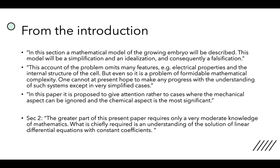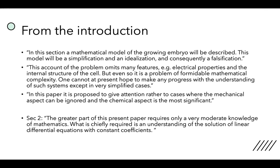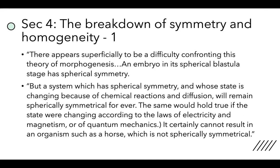In section four, Turing considers the idea of breakdown of symmetry and homogeneity. The homogeneous equilibrium is perturbed, and the perturbation does not bring the system back — that's the breakdown of homogeneity. The breakdown of symmetry is something we haven't explicitly discussed yet in this class, and I'll try to come back to it later.